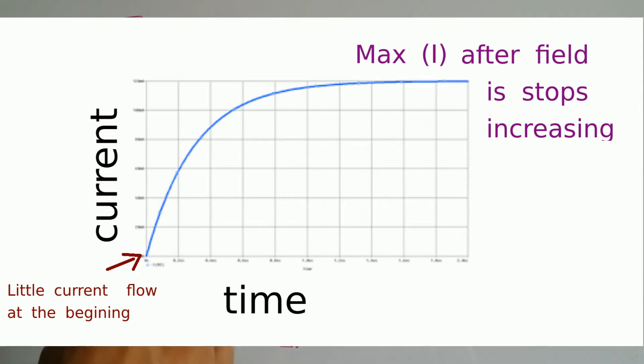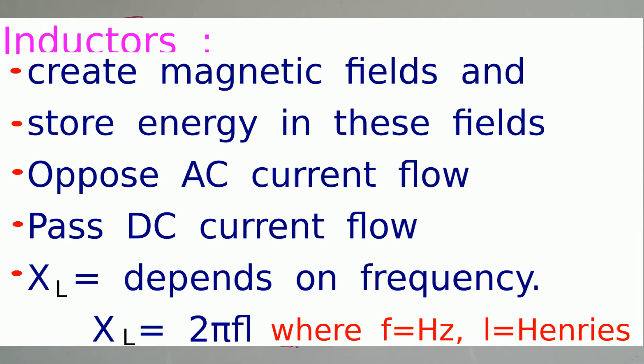Yes, they pass DC voltages and act just as a piece of wire. The reactance of an inductor, which is the same thing as resistance but it's called reactance, is calculated by the formula 2πf times L, where f is frequency times inductance.